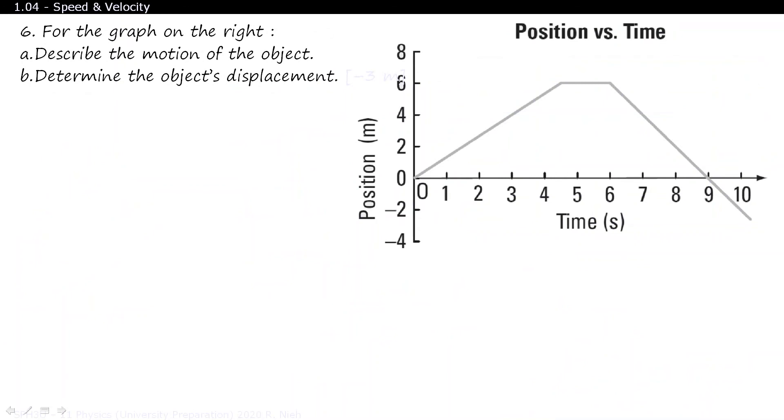For the graph on the right, describe the motion of the object. Initially, the person moves 6 meters ahead in the first 4.5 seconds. Then the person takes a 1.5 second break. Finally, the person walks in the opposite direction for a total distance of 2, 4, 6, 8. And I think that's 9 meters backwards. So that's the motion of the object. Moving 6 meters forwards in the positive direction, pausing for about 1.5 seconds, and then walking backwards for about 9 meters.